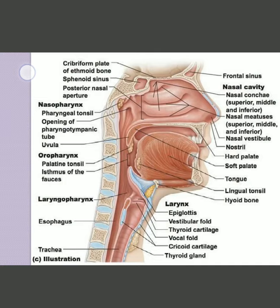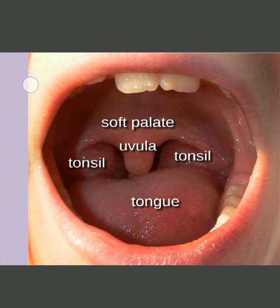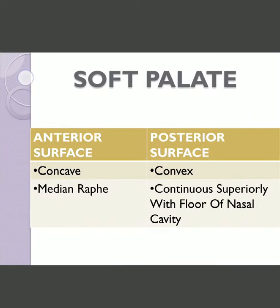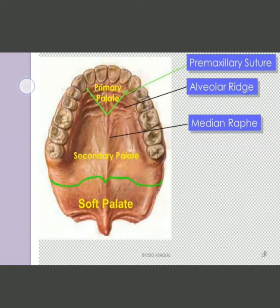The soft palate has two surfaces. The anterior surface faces the oral cavity, is concave, and presents a median groove. The posterior surface is convex and is continuous superiorly with the floor of the nasal cavity.